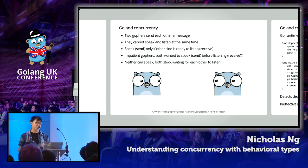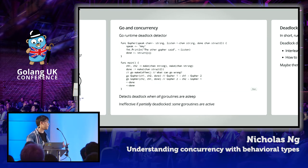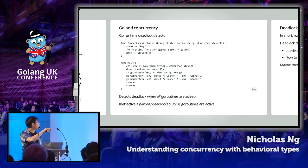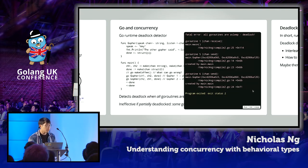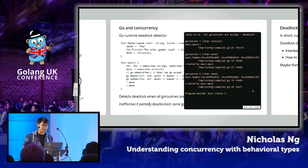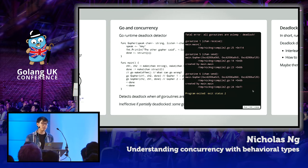This is a textbook example of a communication deadlock. If we implement this as a program, we have two Gophers spawned as goroutines, each starting by sending 'hey' to the speak channel and then trying to receive a message from the listen channel — they try to speak first before they listen. If we run this program, we get 'fatal error: all goroutines are asleep — deadlock!' This is reported by Go's runtime deadlock detector, which works by checking if any goroutines are still running.